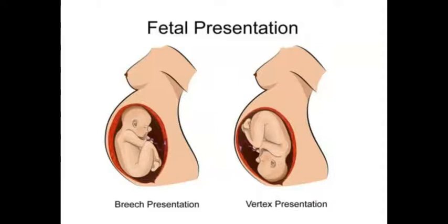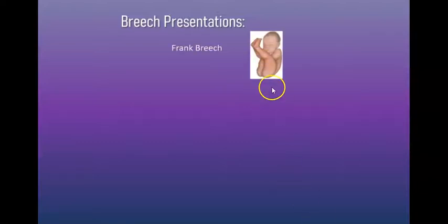So we talked about the first longitudinal lie — that vertex presentation or cephalic presentation where the baby's head is closest to the mom's cervix. Another type of longitudinal lie we can have is the breech presentation. This is where the baby's buttocks is going to be closest to the mom's cervix and this is going to be the most common malpresentation. Sometimes breech presentation is going to require a c-section delivery. The most common breech position is going to be frank breech, which means the baby's thighs are flexed at the hips — both legs are completely up by the baby's face. This type may be safely turned to allow for vaginal delivery in some cases.